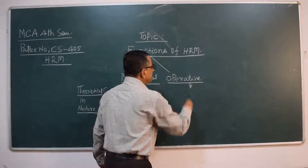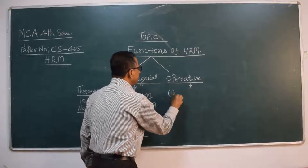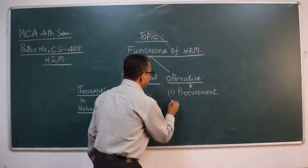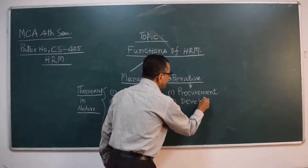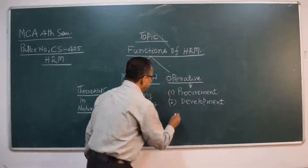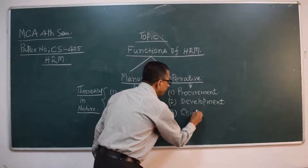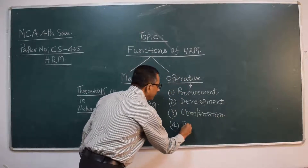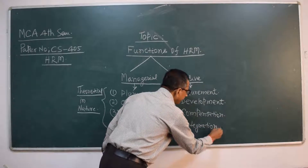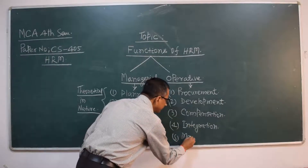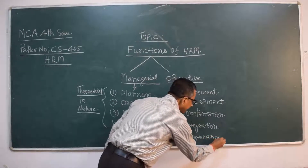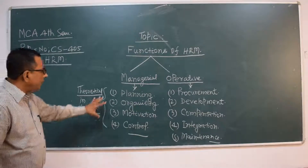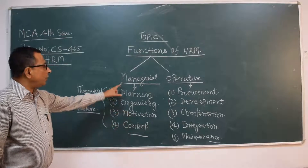The second function, that is operative function, consists of: first, procurement; second, development; third, compensation; fourth, integration; and fifth, or last, maintenance. So the functions of human resource management are an amalgamation of these eight functions — managerial and operative functions.